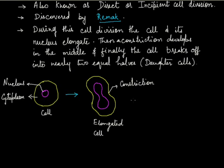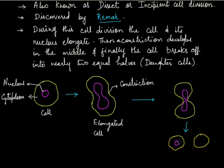A constriction or depression develops in the middle. This constriction or depression will deepen further. As we have seen in the third part, the constriction has grown deeper. Now ultimately, this parent cell will break off into two roughly equal daughter cells. These two daughter cells are roughly equal in their cytoplasmic and nuclear content.